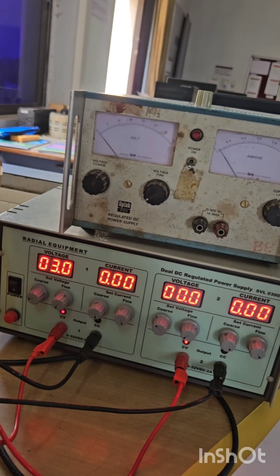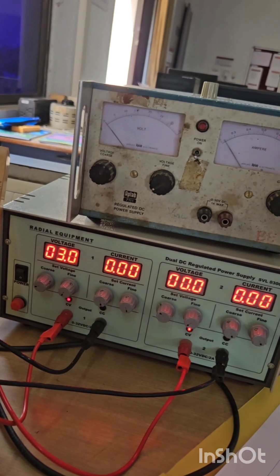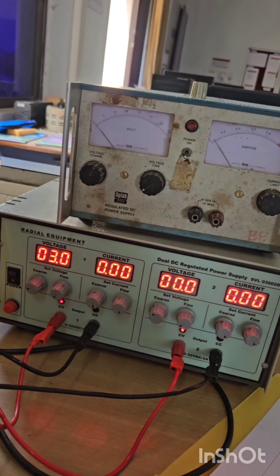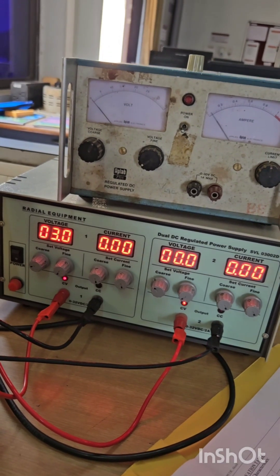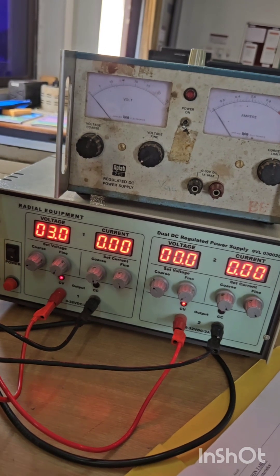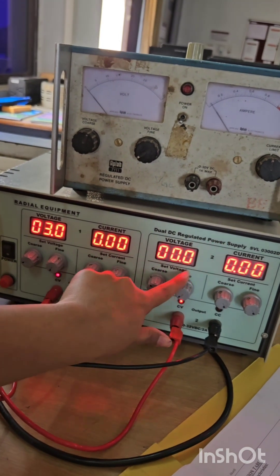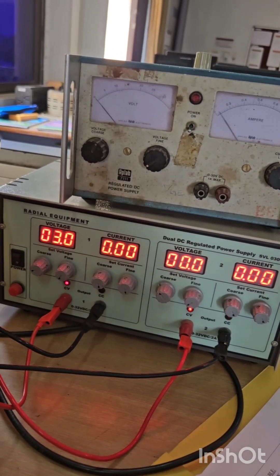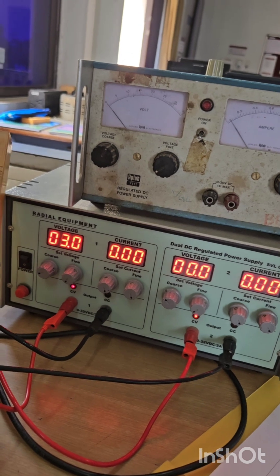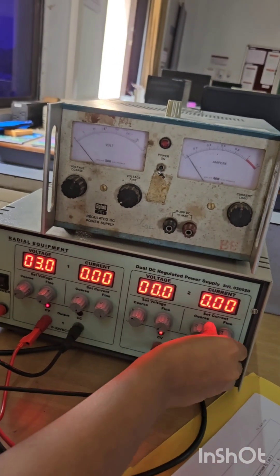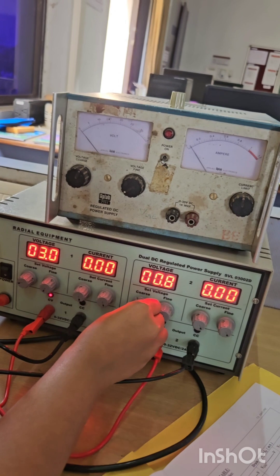For this transfer characteristic, we have to take VGS as 3 volt, not 0. This is opposite of the previous part. Here we have to keep VDS constant and vary VGS, and note down the reading for ID. Keep this current values maximum. Set VDS to 5 volt.